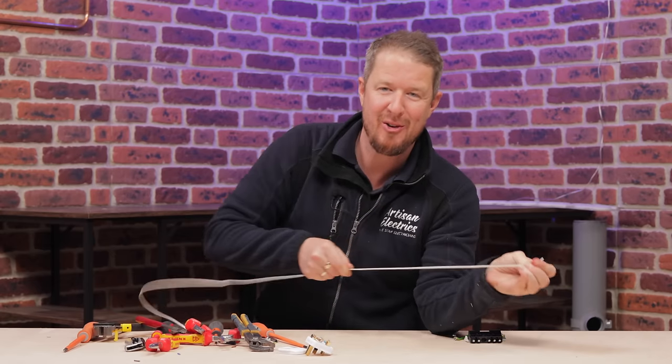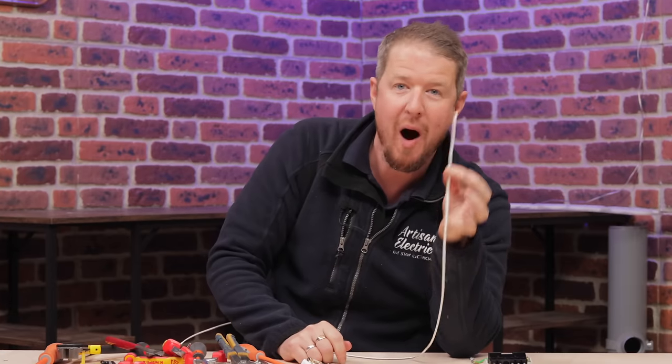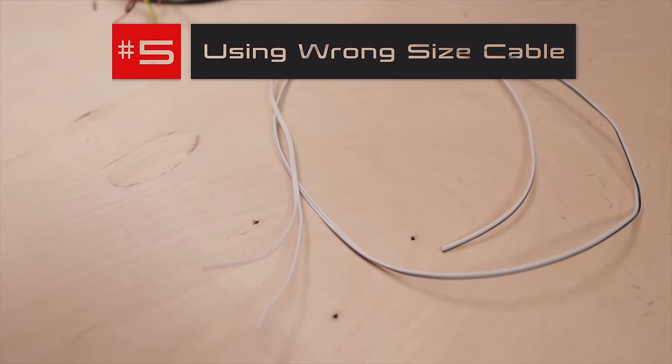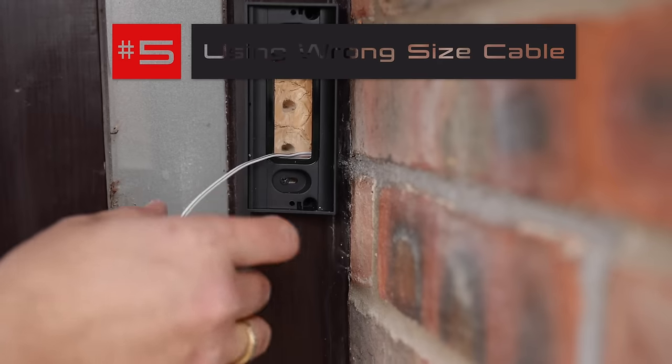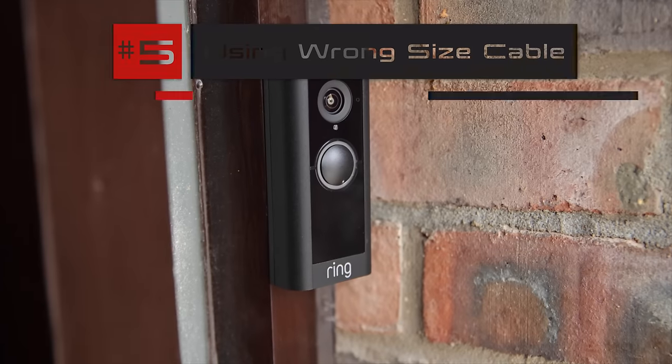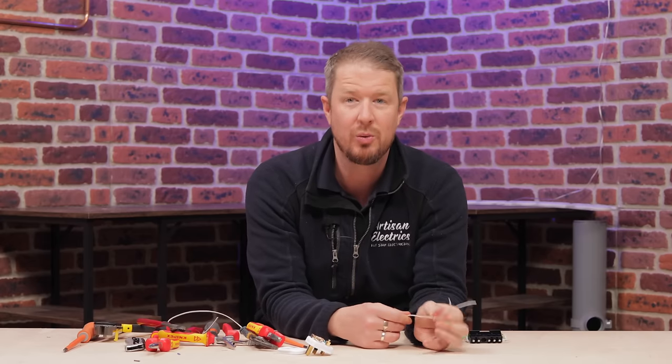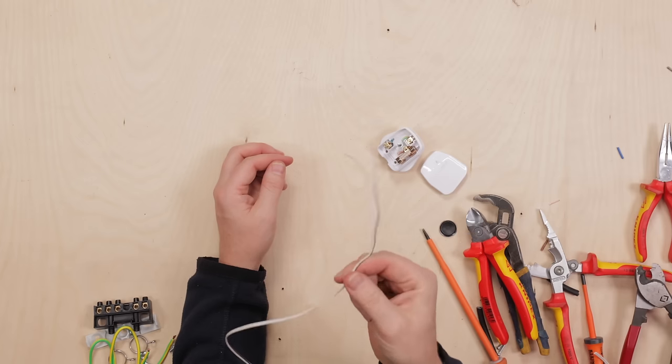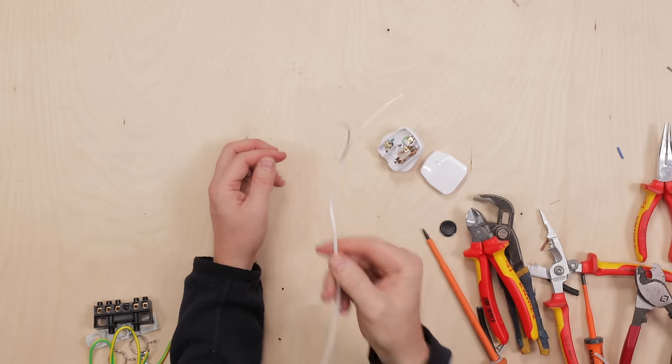Another DIY classic that we see a lot is using the wrong size cable. For example, this is one of the worst ones. Wiring lights in bell wire. Now bell wire is designed for exactly what it says. Wiring up doorbells. It's not designed for any kind of heavy power or voltage. It's just designed for like 12 or 24 volt signals for doorbells. But the amount of times I've seen people wiring up their shed or their loft lights with bell wire is beyond belief.